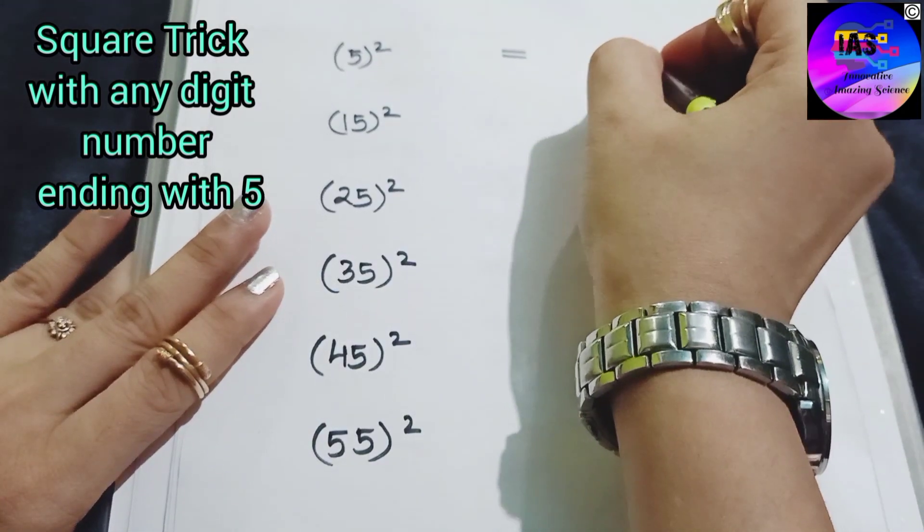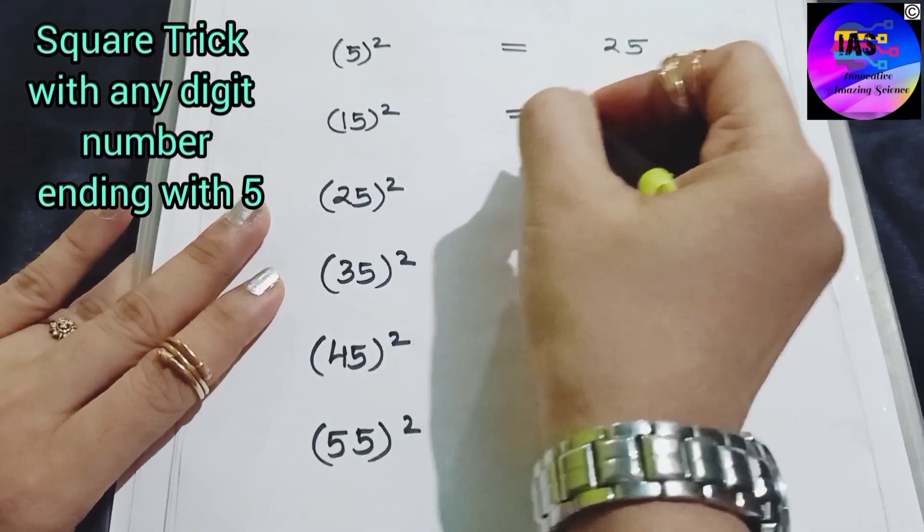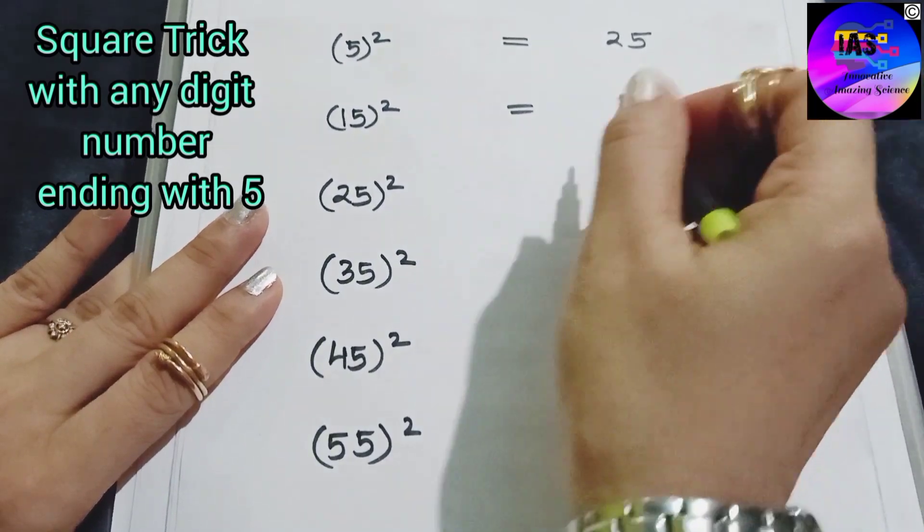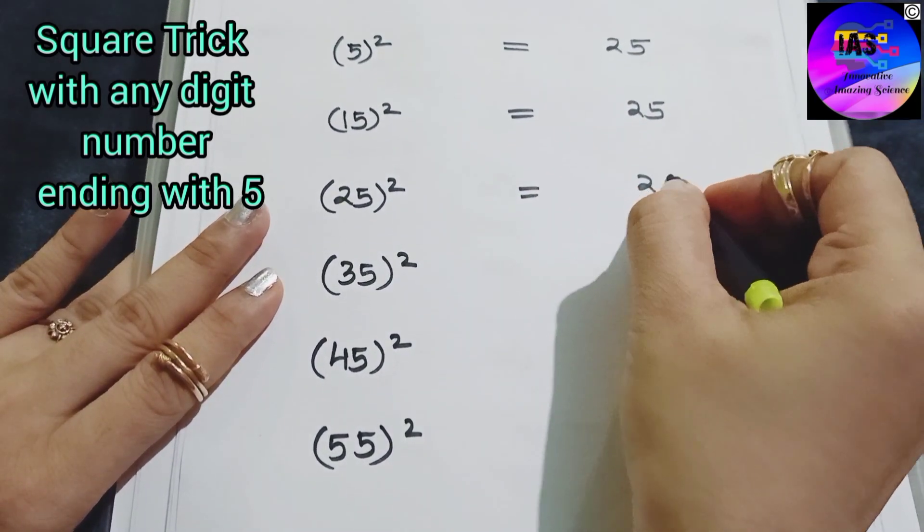Okay, so the answer for 5 square is 25, so let's write 25 for all the other squares also.